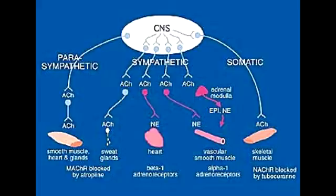Describe the release of acetylcholine in the parasympathetic nervous system. When the parasympathetic nervous system is stimulated, it causes the preganglionic nerve to release acetylcholine, and that acetylcholine will act on the nicotinic receptors of the postganglionic neuron. Then the postganglionic nerve releases acetylcholine to stimulate the muscarinic receptors of the target organ.